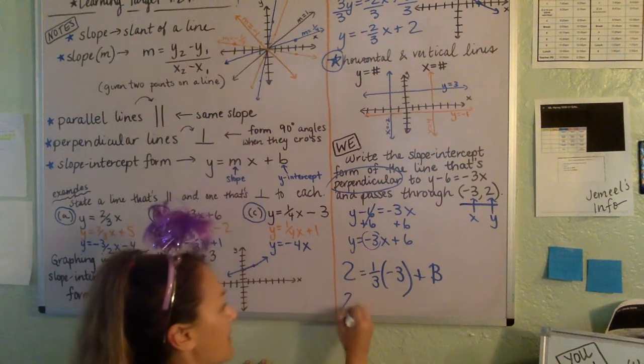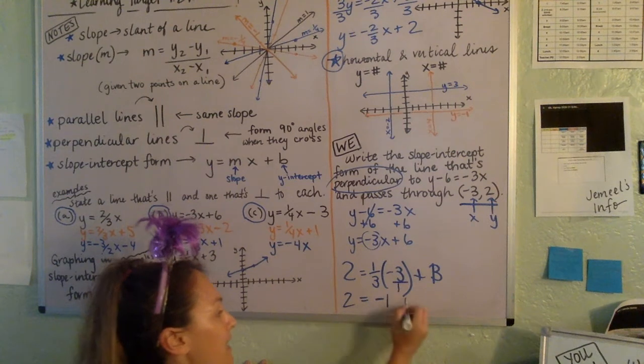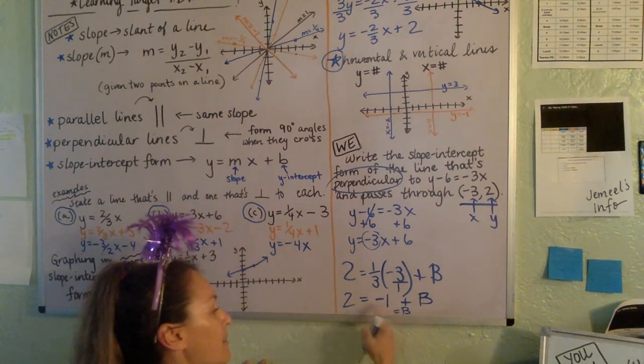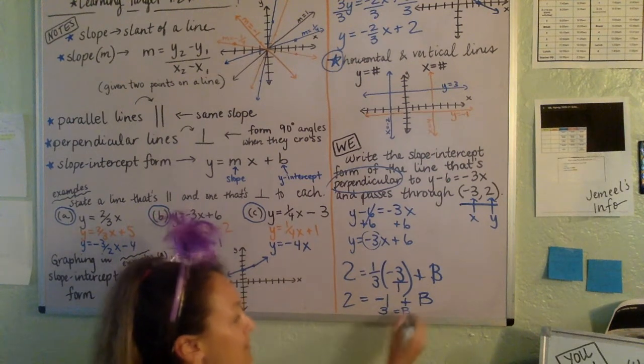So if we do that, we're going to get 2 equals 1 third times negative 3, which is really negative 3 over 1, is negative 1 plus B. And if we just add the 1 over, plus 1 here, plus 1 here, we're going to get that the B is 3.